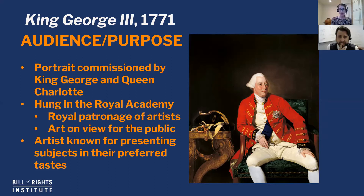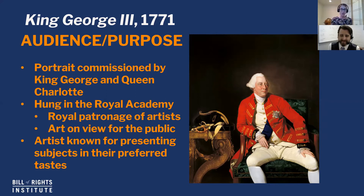This particular artist, Johann Zoffany, was known for presenting subjects as they wanted to be presented. That gives us insight into King George III — he didn't really like pretentiousness. He kind of liked simple things. So even though there's an ornate table and a pretty snazzy uniform and a very nice chair, the background is simple. There's no crown, no orb and scepter, no symbols of royal power, no coronation robe. It's just him in an officer's uniform.